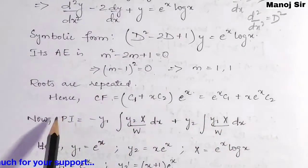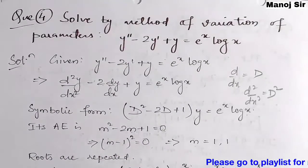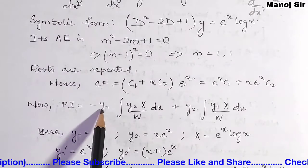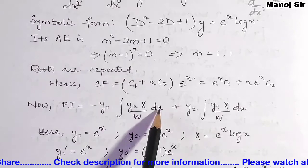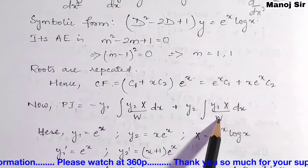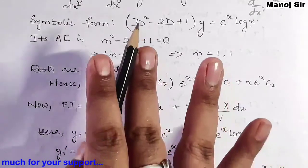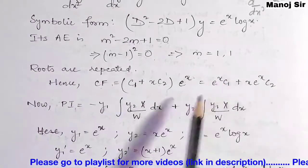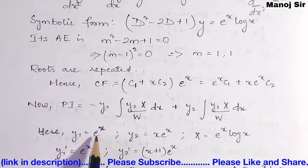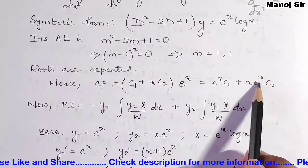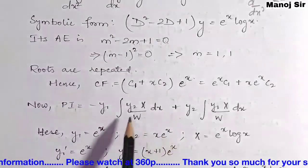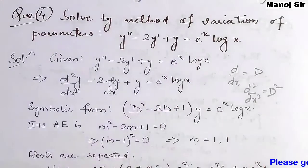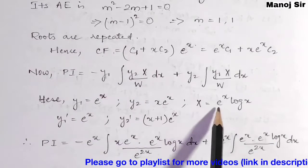Next we find the particular integral using the method of variation of parameters. The formula is PI = -y1·∫(y2·X/W)dx + y2·∫(y1·X/W)dx. We need four values: y1, y2, X, and W. Here y1 = e^x (coefficient of c1), y2 = x·e^x (coefficient of c2), and capital X = e^x·log x (the RHS of the equation).